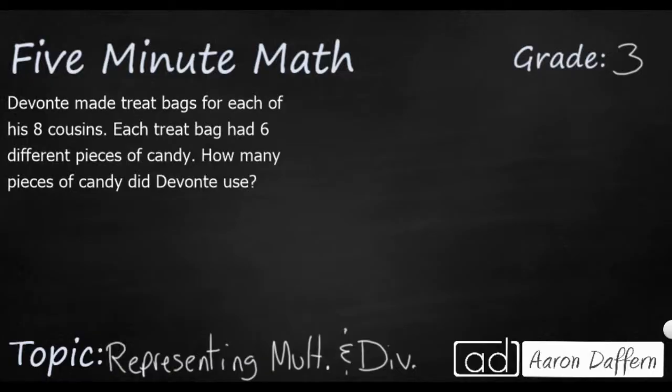So we have a simple word problem here. Devontae is making treat bags for his eight cousins, and each treat bag had six different pieces of candy. How many pieces of candy did Devontae use? Sometimes you're not simply asked to solve a problem with a fact, because eight times six is a known fact. You might be asked how you can show that in different ways. So let's look at this three different ways.